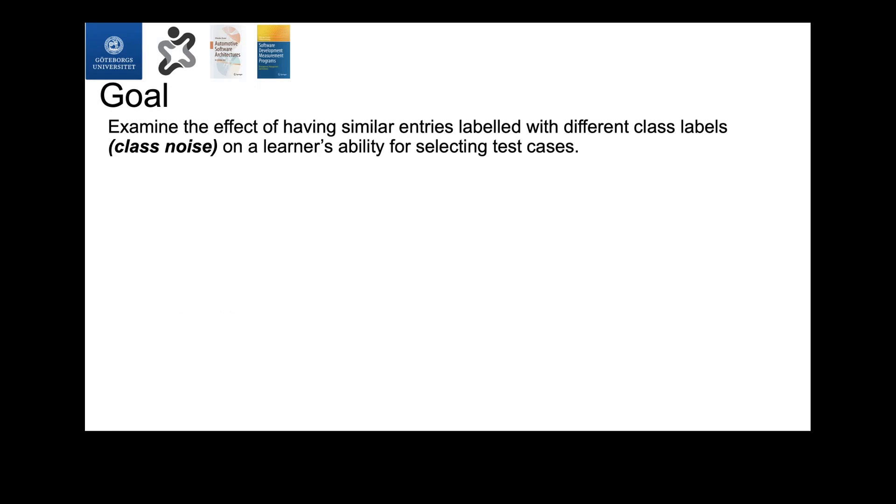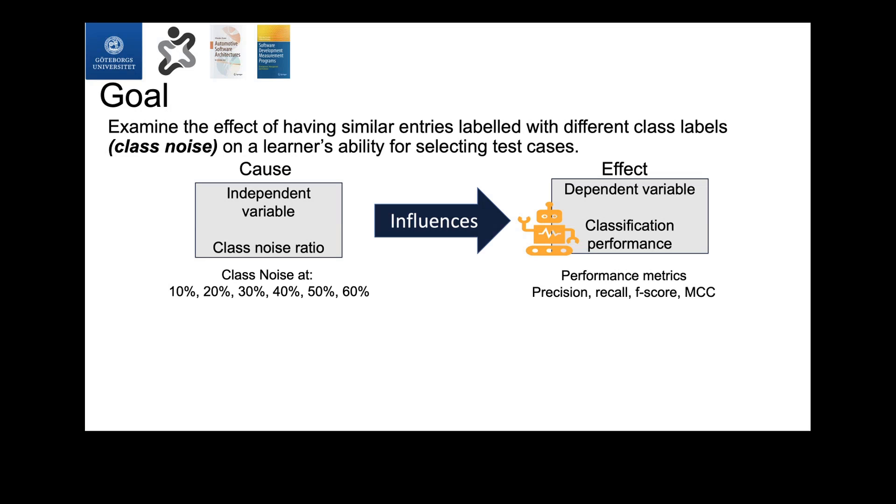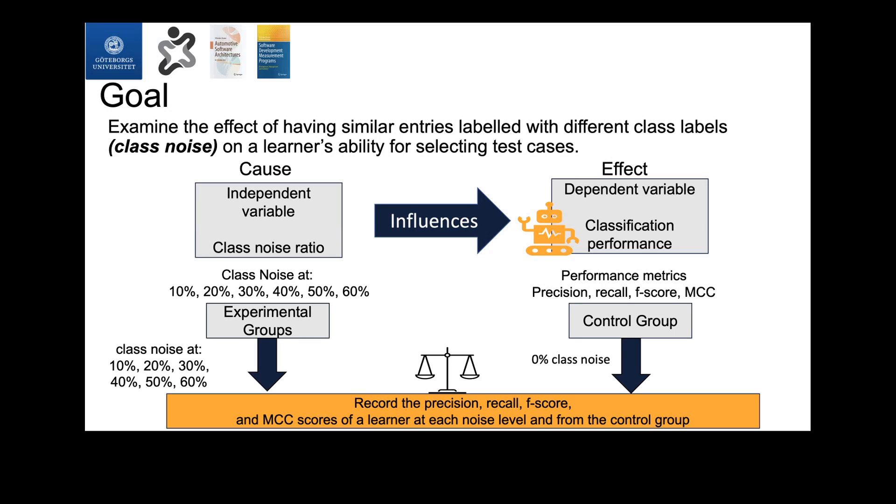The purpose of the study that we've recently conducted was to examine the effects of having such noise in the data on the performance of a learner for test case selection. For that purpose, we designed and implemented controlled experiments using historical code changes and test execution results for a program written in the C language. The only independent variable we had was class noise, which was examined for an effect on four dependent variables, which were precision, recall, F score, and Matthew correlation coefficient, or MCC. To support the investigation of the goal, we needed to have a baseline group or a control group in order to seed noise at various levels, and then to statistically compare the effect of the seeded noise on the performance of the model.